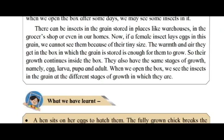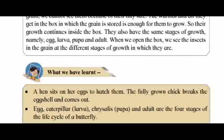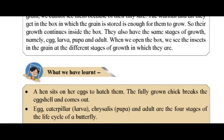These insects also have the same stages of growth: egg, larva, pupa, and adult. When we open the box, we see the insects in the grain at the different stages of growth in which they are.